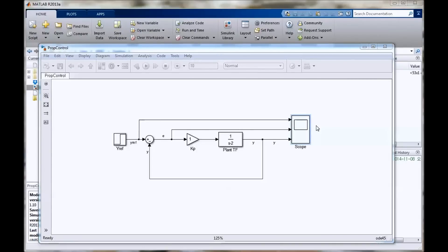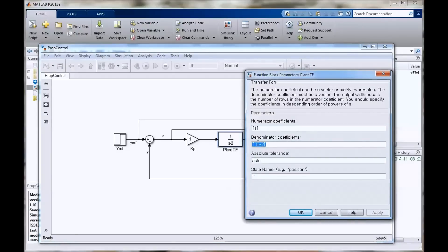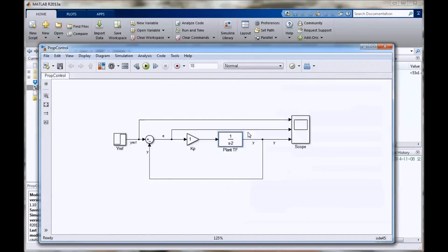Here we are back in MATLAB, and we are applying our new plant transfer function here. So we've set our denominator coefficients to 1 and negative 2, so we can check here that it's the same equation as we just looked at.